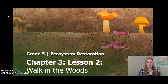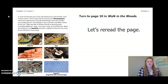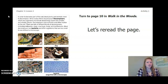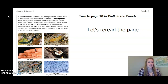Let's continue our learning and reread page 10 of Walk in the Woods. In order to become part of the soil, dead plants and animals need to decompose. What makes them decompose? Decomposers — which are organisms that break dead things down into smaller and smaller pieces. Decomposers add nutrients and other matter to the soil. There are lots of different kinds of decomposers, including millipedes, slugs, sow bugs, fungi, and earthworms.